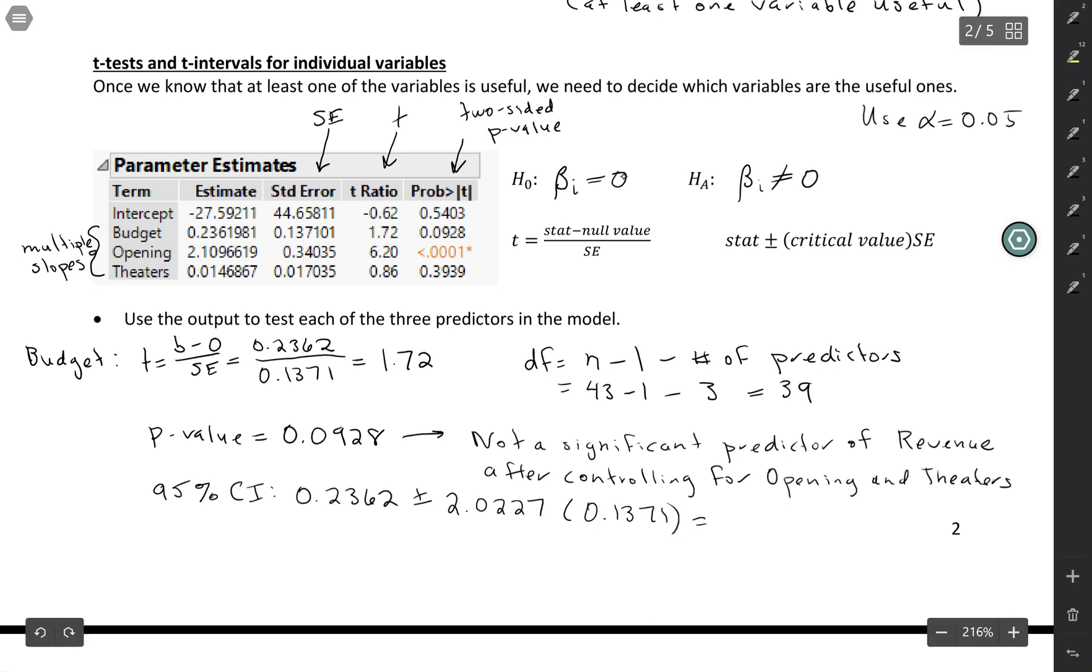And if I put all that together, I get a confidence interval that goes from negative 0.0411 up to 0.5135. So it's not really surprising here that this confidence interval includes zero. It could be positive, it could be negative, it could have no effect at all. And that's consistent with our decision from the p-value. Having a larger p-value said that this was not a significant predictor. In other words, it could just be by random chance that we got this slope, when in reality there is no relationship after controlling for these other variables.